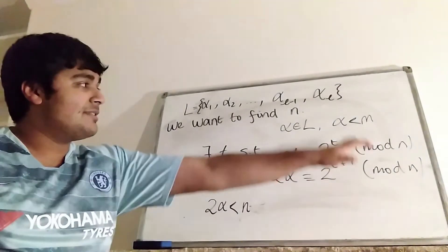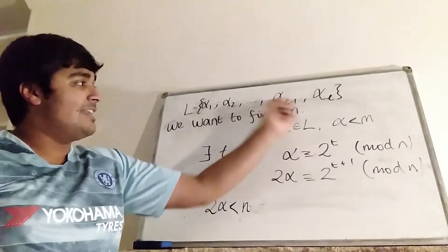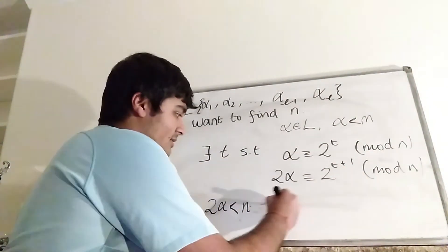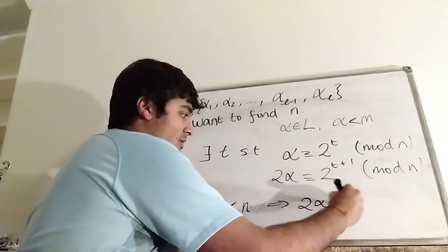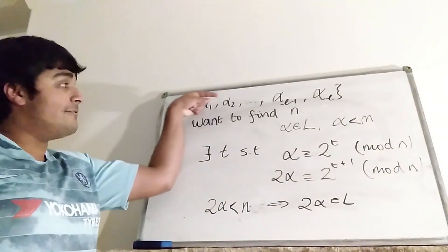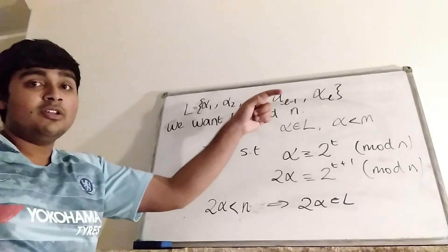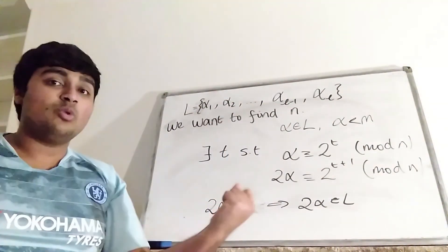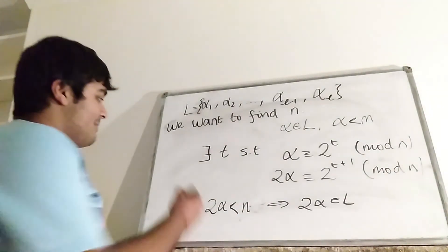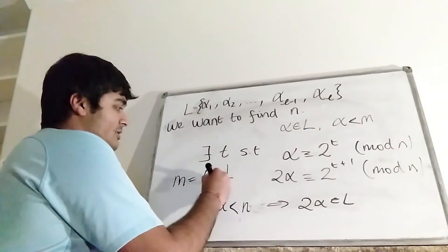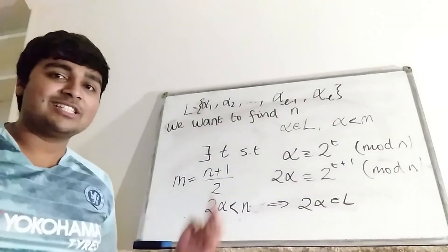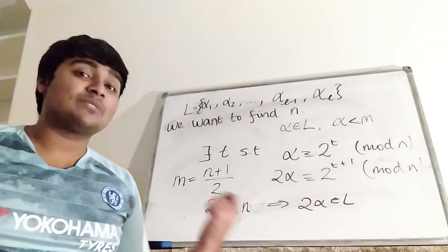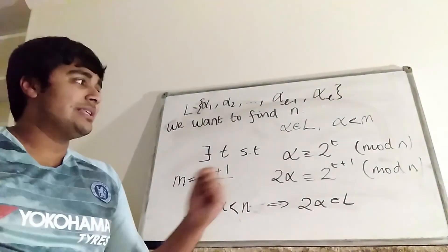So we can work out what m is: work along our list and find the smallest element alpha for which when you double it, 2 alpha is no longer in this list — that tells us what m is. Then from m, since m = (n + 1) / 2, we rearrange to get n = 2m − 1, and we're done. So given the list, yes, we can work out what n is using this argument.